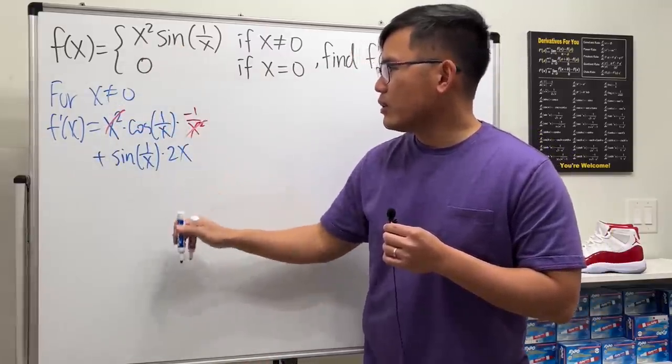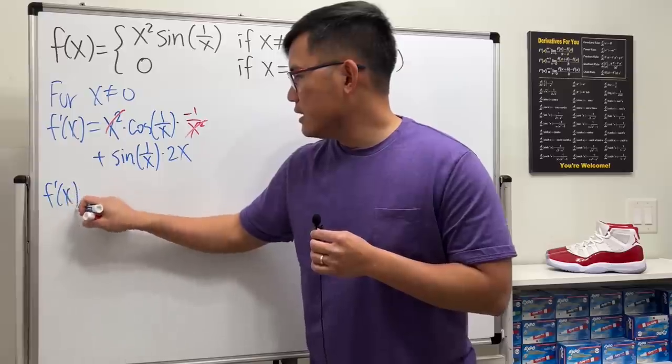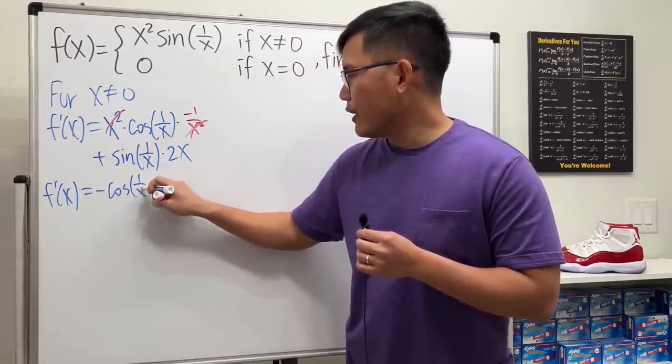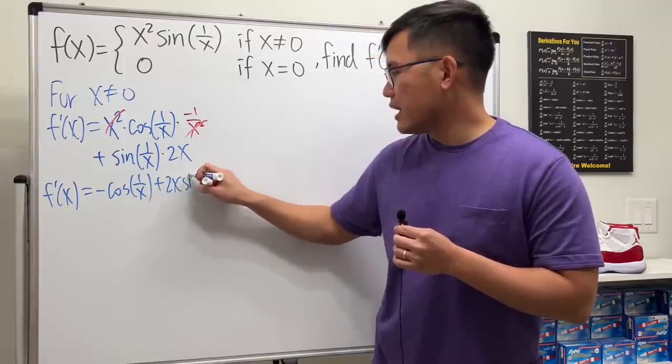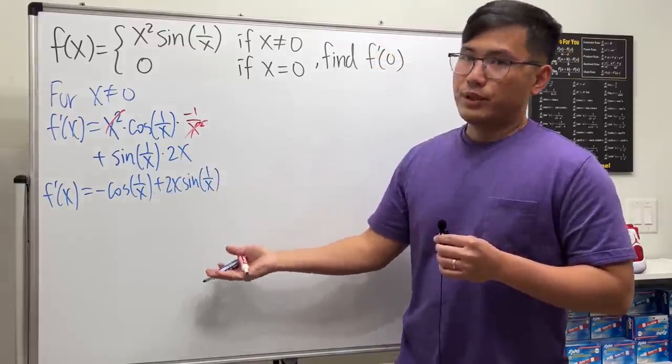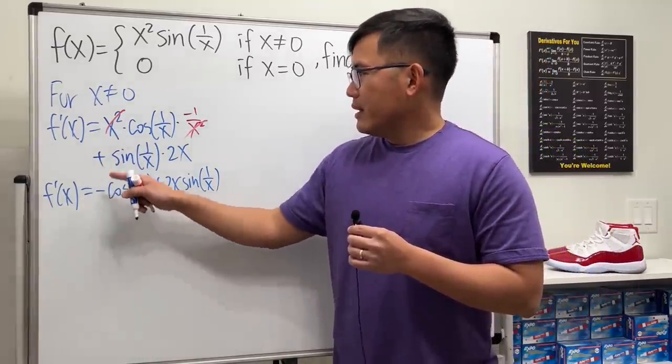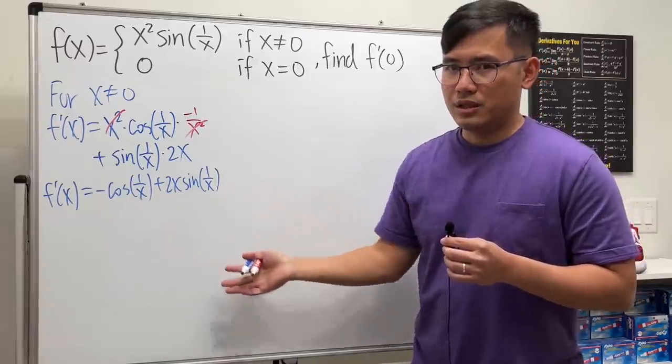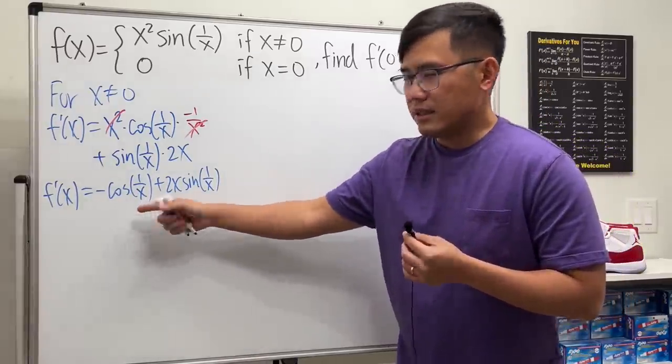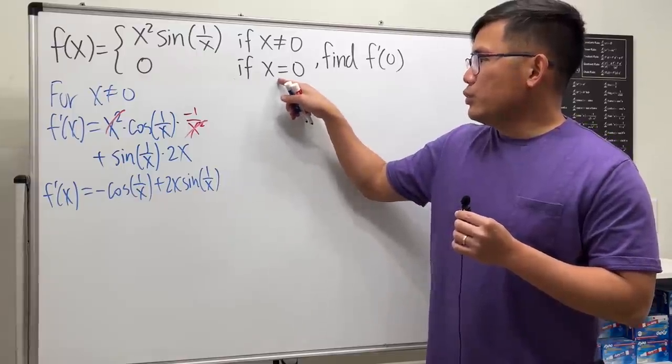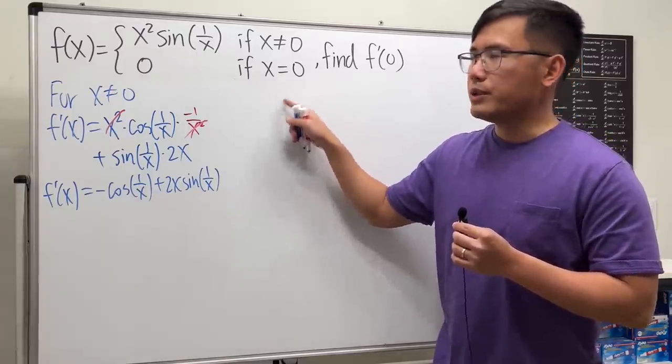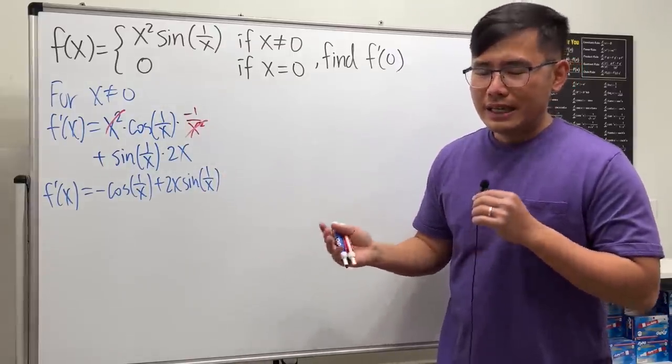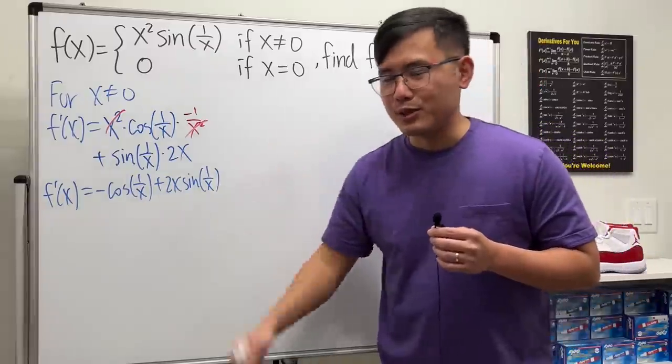And then we add the second function, sine of 1 over x times the derivative of the first, and that will give us 2x. And now this and that cancel. So we see that f prime of x is just negative cosine of 1 over x plus 2x sine of 1 over x. It looks pretty cool, right? But here's the thing. Right here, x is not equal to 0. I cannot plug in 0 here. In fact, it's not defined either. And we do have the second piece. When x is equal to 0, we get 0. But that's just a point. You cannot really just differentiate that and say the answer is 0. I know the answer to this question is 0, but we cannot just do that.